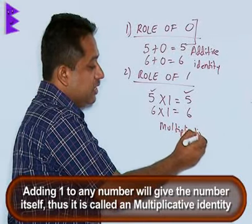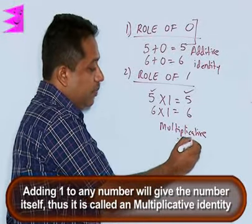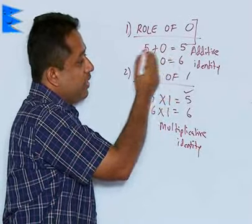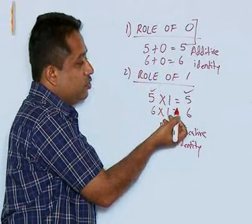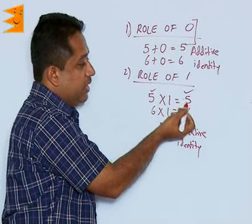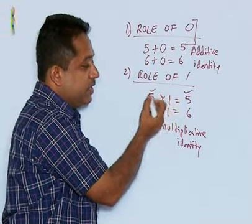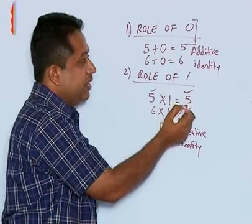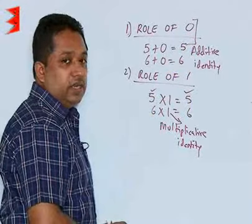This is the difference in the property of 0 and 1. When we multiply 0 with a number, we are getting 0, so the number is not obtained. But when we multiply a number with 1, we get the number. So 1 is called a multiplicative identity, whereas 0 is called additive identity.